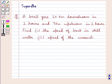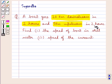Hello and welcome to the session. In this session we discuss the following question: a boat goes 20 km downstream in 2 hours and 4 km upstream in 2 hours. Find first the speed of the boat in still water, and second the speed of the current.